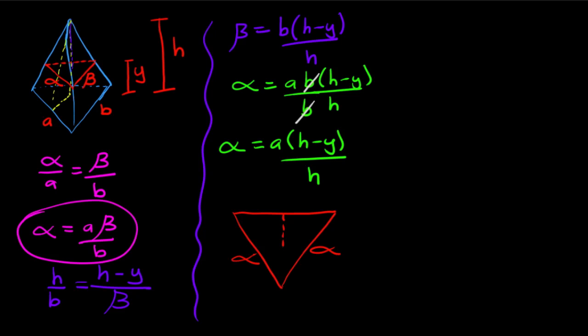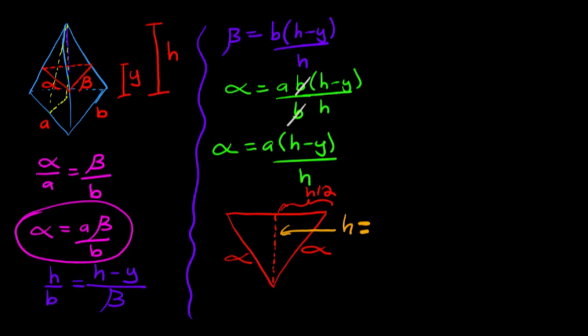To find the area of this triangle, I need to find the height. This side is alpha over 2. Using the Pythagorean theorem, we can find that the height equals square root of 3 over 2 times alpha.